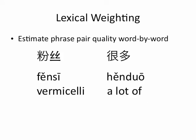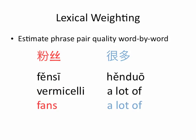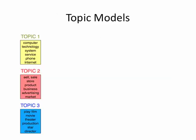To see why this might be a reasonable idea, consider the Chinese phrase 粉丝很多. Now, in a formal restaurant-y kind of context, a reasonable translation would be 'there's a lot of vermicelli' or 'there's a lot of noodles.' But if you're in a different context — say, a more informal web chat context — a more reasonable translation would be 'there are a lot of fans.' This is the sort of distinction that we hope to capture automatically using Topic Models.